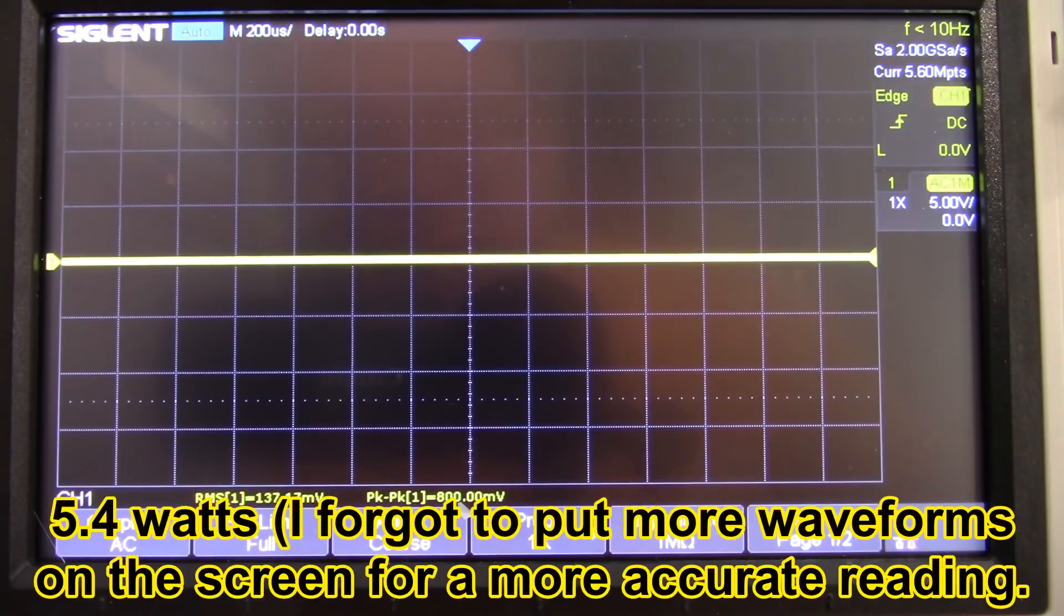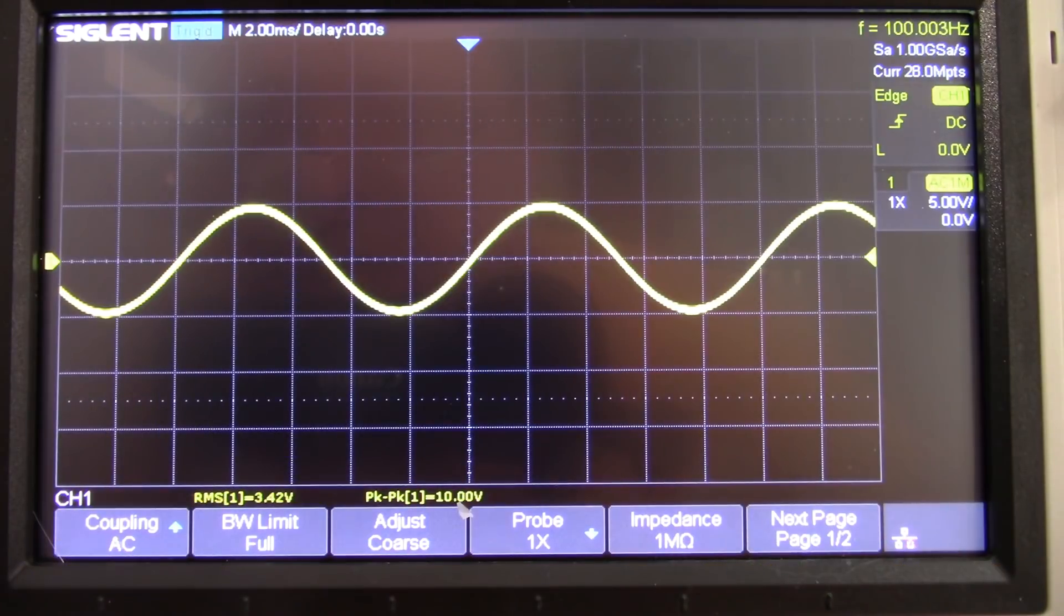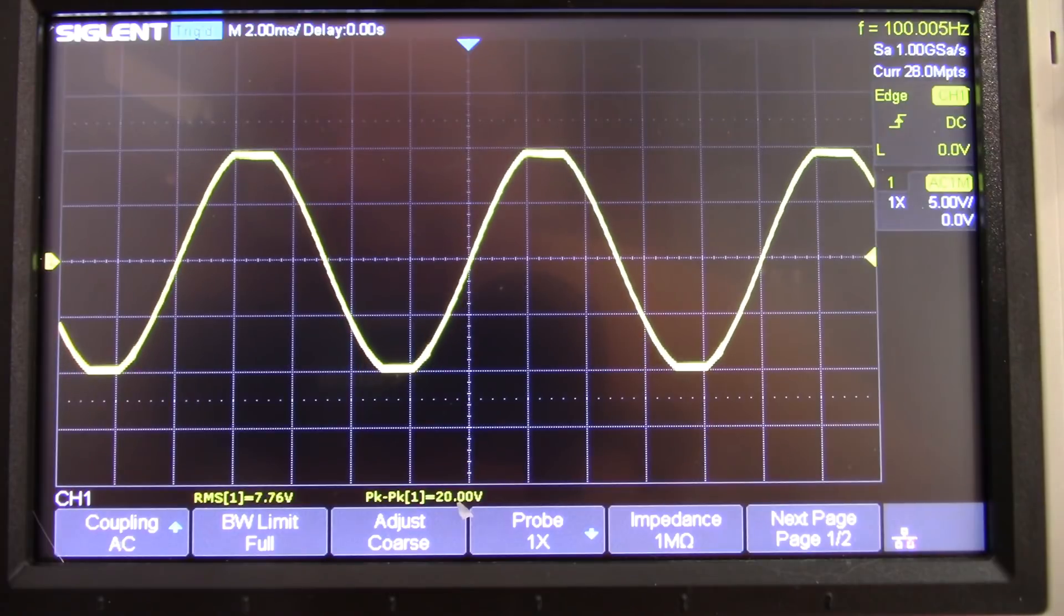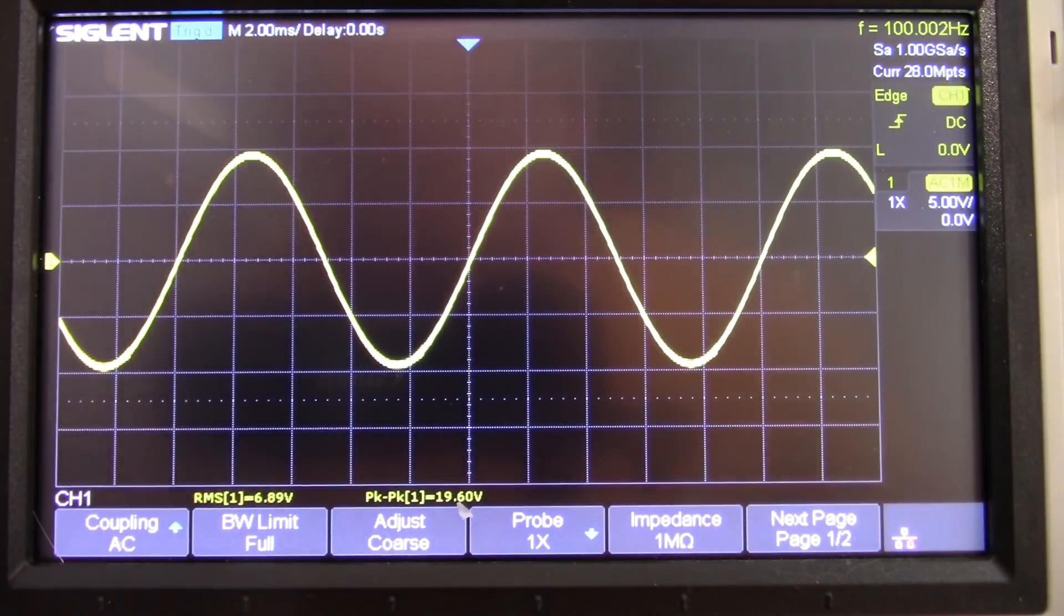Okay this is the subwoofer channel here. No oscillations, about 6.9. Pretty close. Yeah 5.95, so a little bit more.